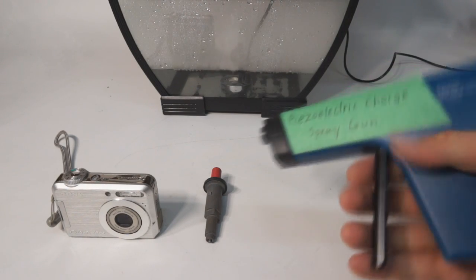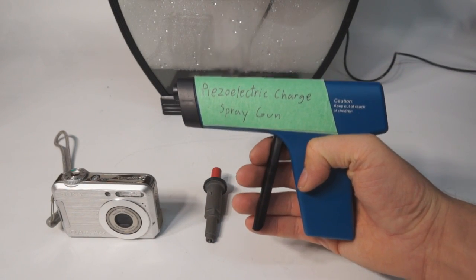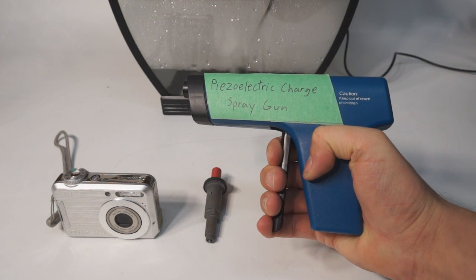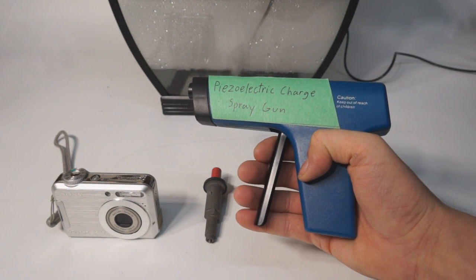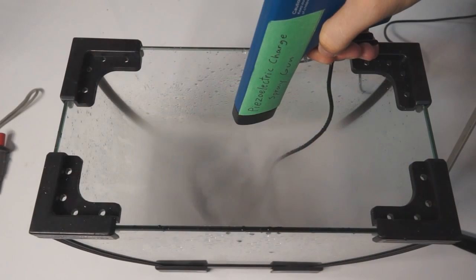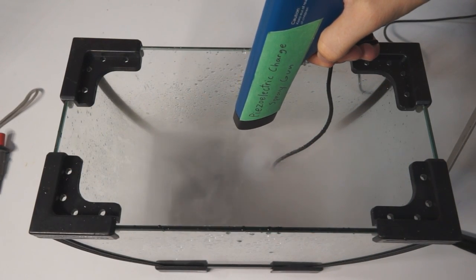The piezoelectric element in the anti-static pistol is similar to that of the one inside the barbecue igniter. The difference is, the element inside the anti-static pistol endures a very prolonged strain instead of a sharp impact.